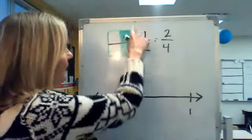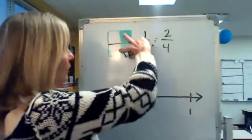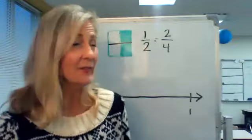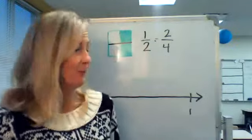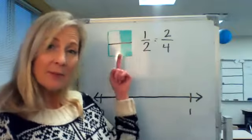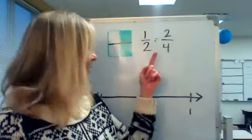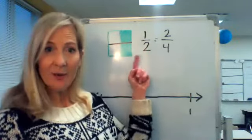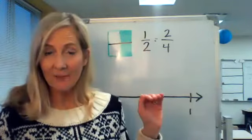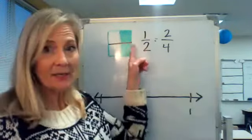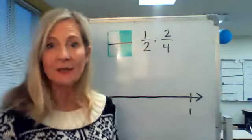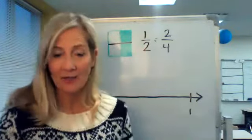So one half is one big piece. Two fourths would be the same amount, but in two smaller pieces. If it was something you were eating, like a part of a candy bar, the same amount would be in your stomach whether you ate one half of the candy bar or two fourths of the candy bar. The amount is the same — just instead of one big piece, two fourths is two smaller pieces that add up to the same amount.